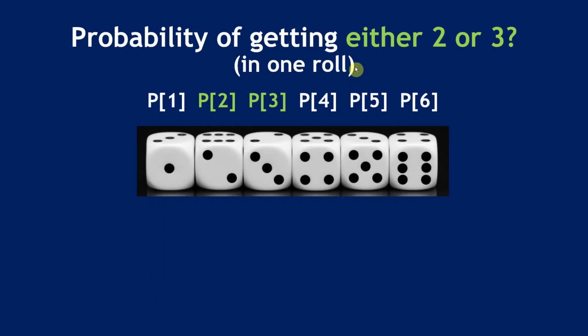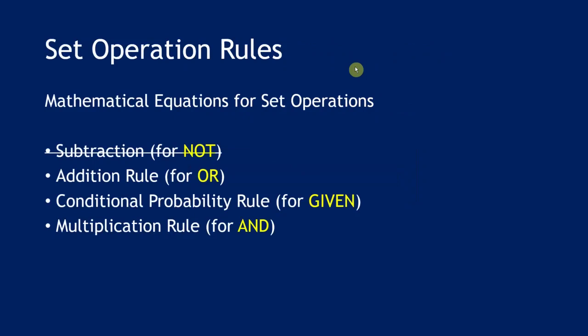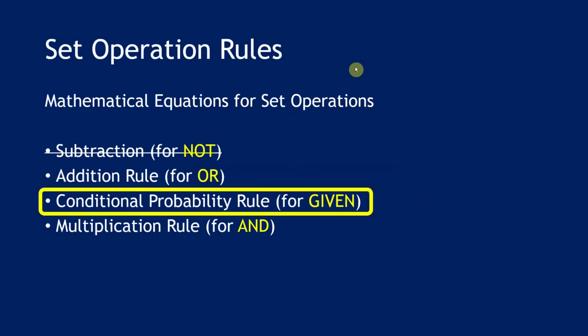See if you can apply the addition rule to calculate the probability of getting either two or three in one dice roll. Think about this for a few minutes — we'll come to the solution at the end of the lecture. Here's another application: can you calculate the probability of rolling an even number on a dice? We'll reveal the solution at the end of the lecture.